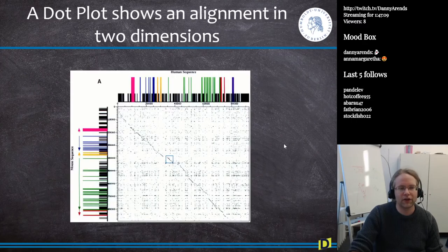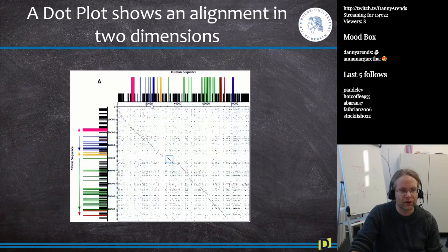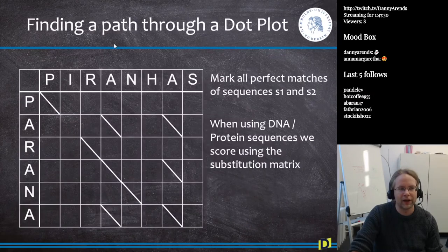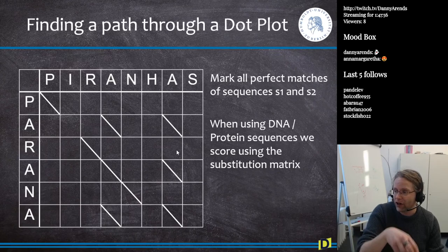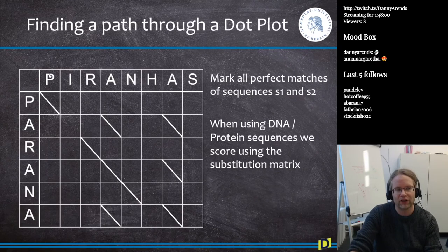The Smith-Waterman algorithm works visually by creating a dot plot and finding a minimal path through it. Here we have the human myoglobin sequence on one axis and the mouse myoglobin on the other. For each pair of letters, we mark if they match. For example, aligning 'parana' with 'parana': P matches P, A matches A, R matches R, and so on. We make a matrix and wherever the row letter matches the column letter, that is a perfect match.